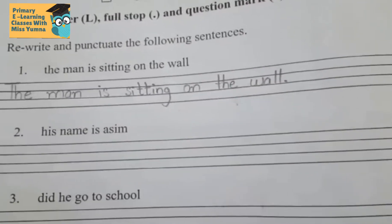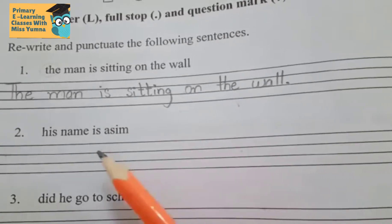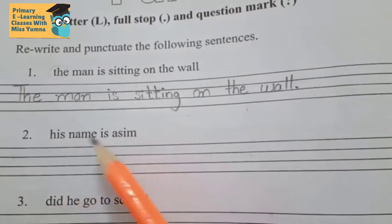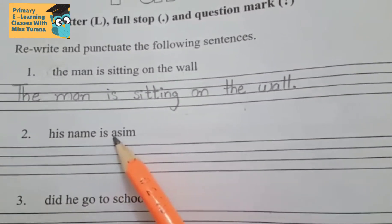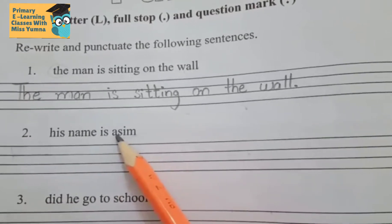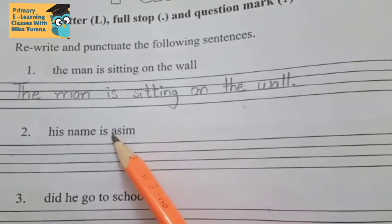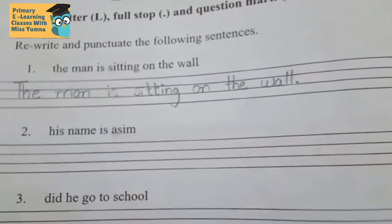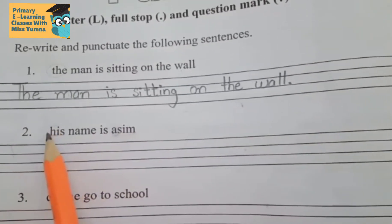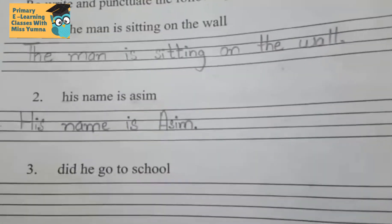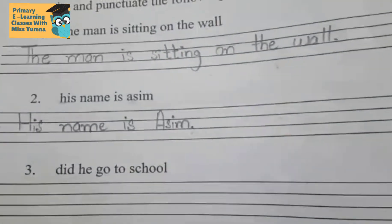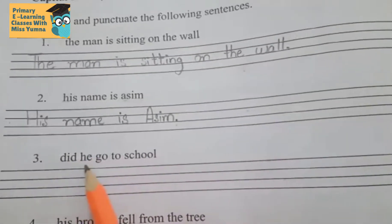Any name or important place in the sentence also starts with a capital letter. As you can see in this second sentence, 'Awesome' is a name of a person or boy, so 'Awesome' also starts with a capital letter. The sentence ends with a full stop.